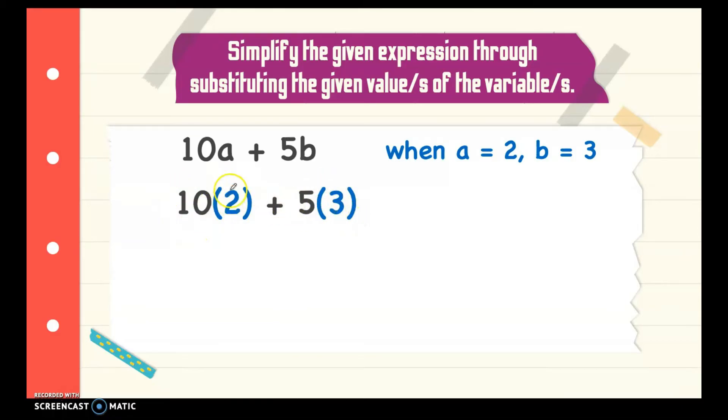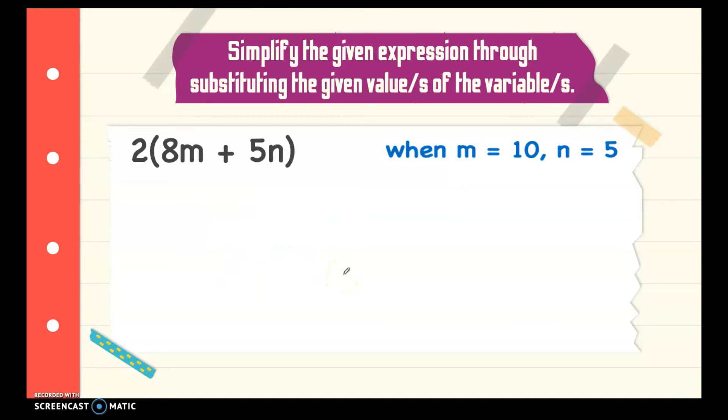You multiply this 2 first before you add. We have here 10 times 2 is 20 and 5 times 3 is 15. 20 plus 15 is equal to 35.